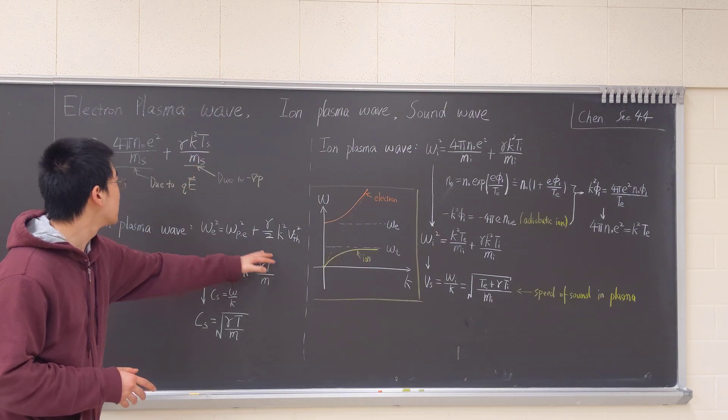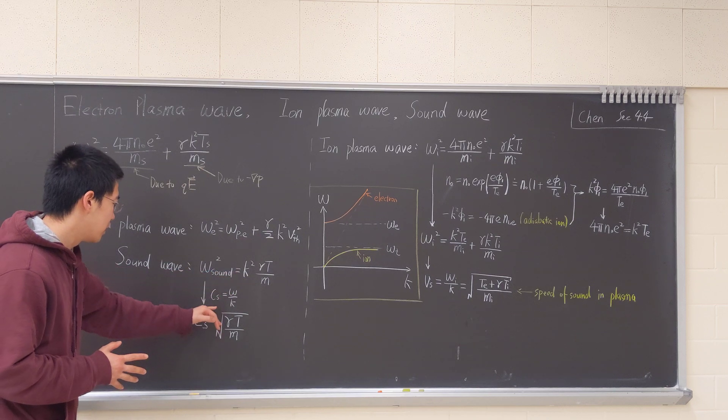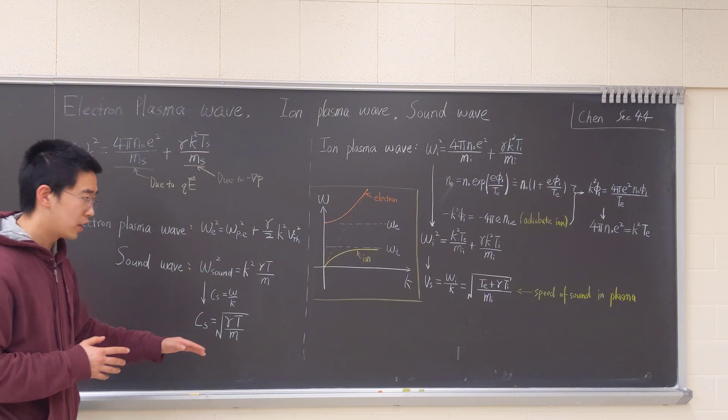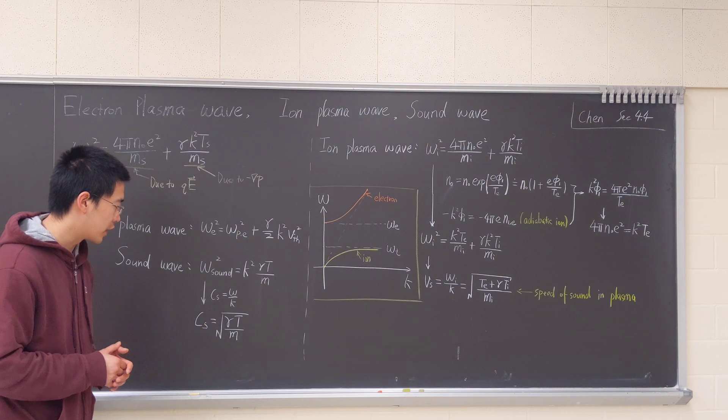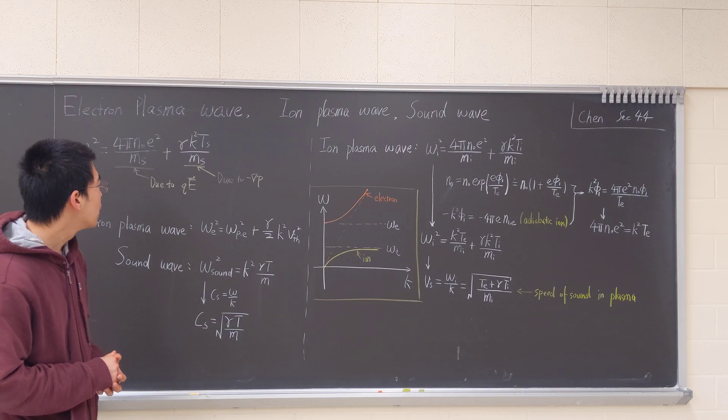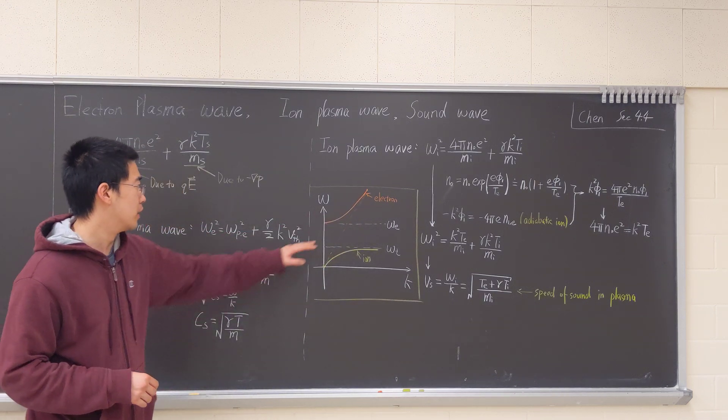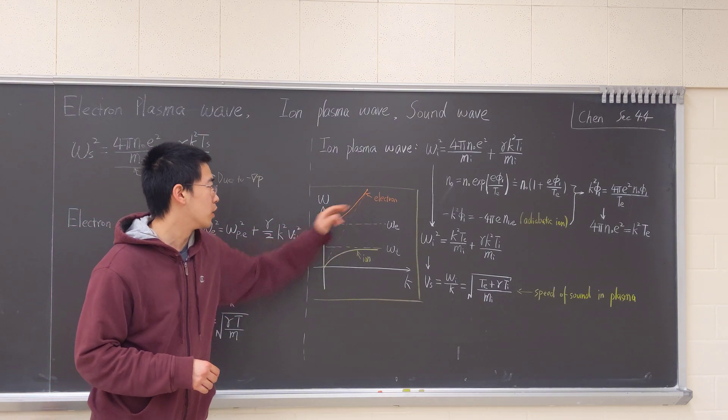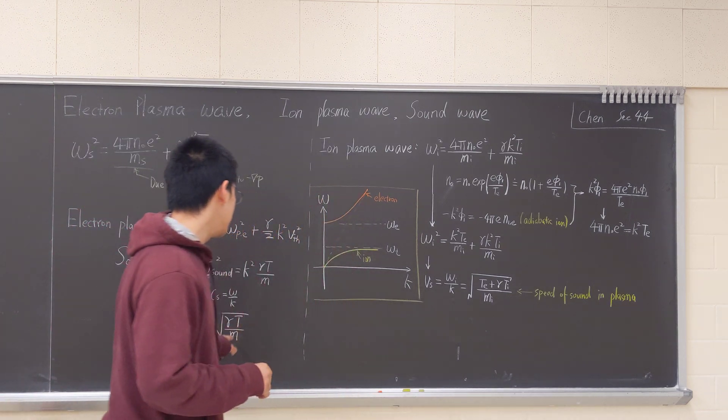So it is in fact the case. And the phase velocity, the speed of sound, will be square root gamma T over M. And this will be the slope of the orange curve, of course with T-E, M-E.